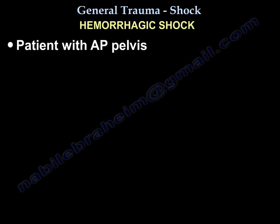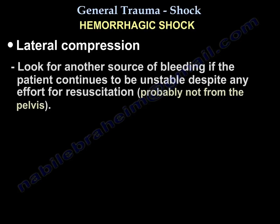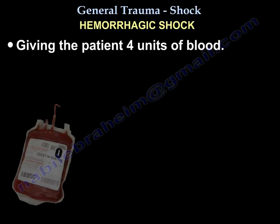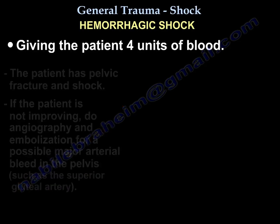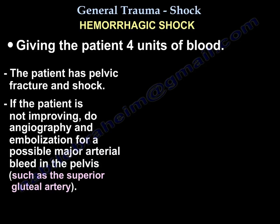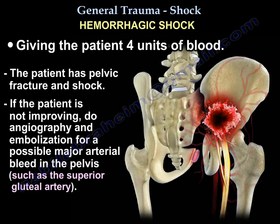For a patient with an AP pelvis injury, you can apply a binder to close the book and help with hypotension and hemorrhage. But if the patient has a lateral compression fracture, look for another source of bleeding — if the patient continues to be unstable despite resuscitation efforts, it's probably not the pelvis. If you give four units of blood for a pelvic fracture in shock and the patient is not improving, you need to do angiography and embolization for a probable major arterial bleed such as the superior gluteal artery.